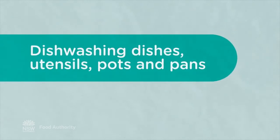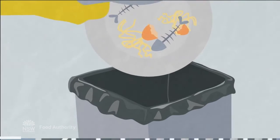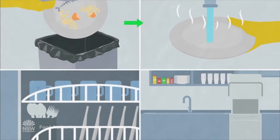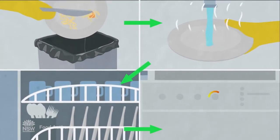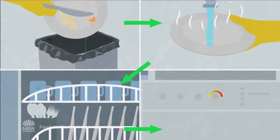If using a dishwasher, pre-clean by scraping and rinsing. Stack so all surfaces are exposed. Cutlery placed handles down. Then run the dishwasher on its longest, hottest cycle.